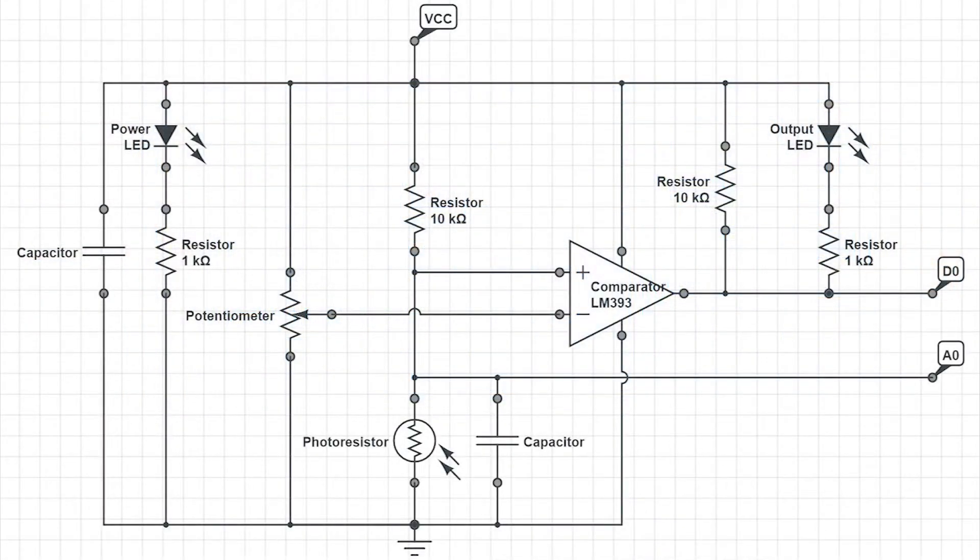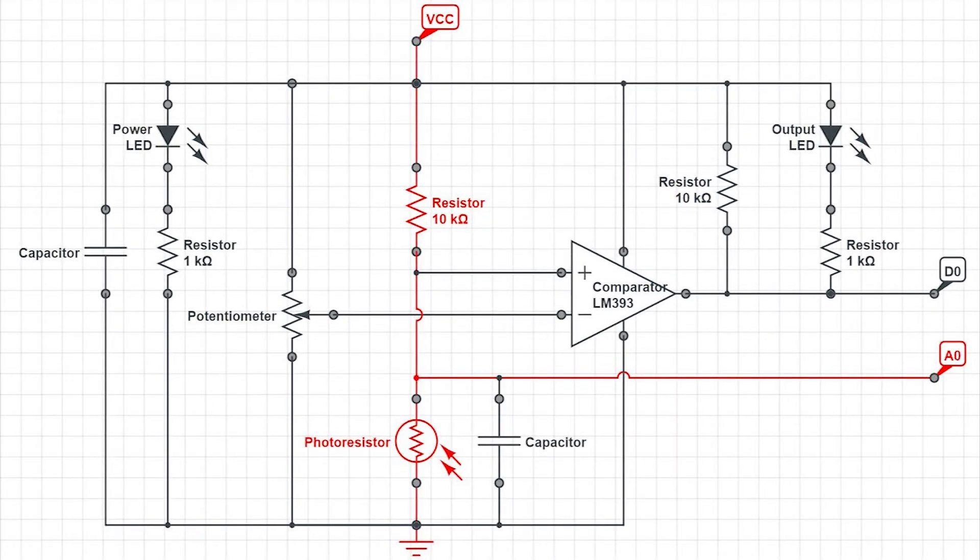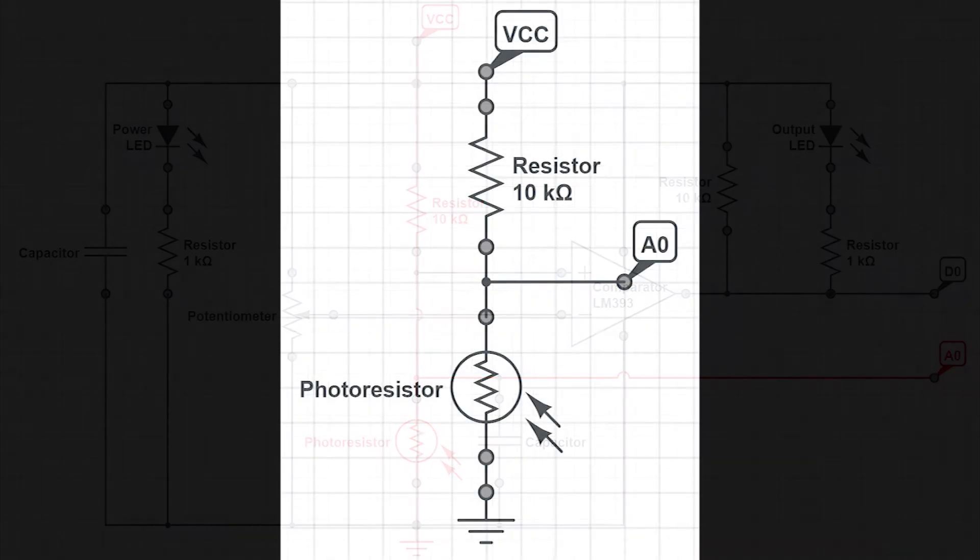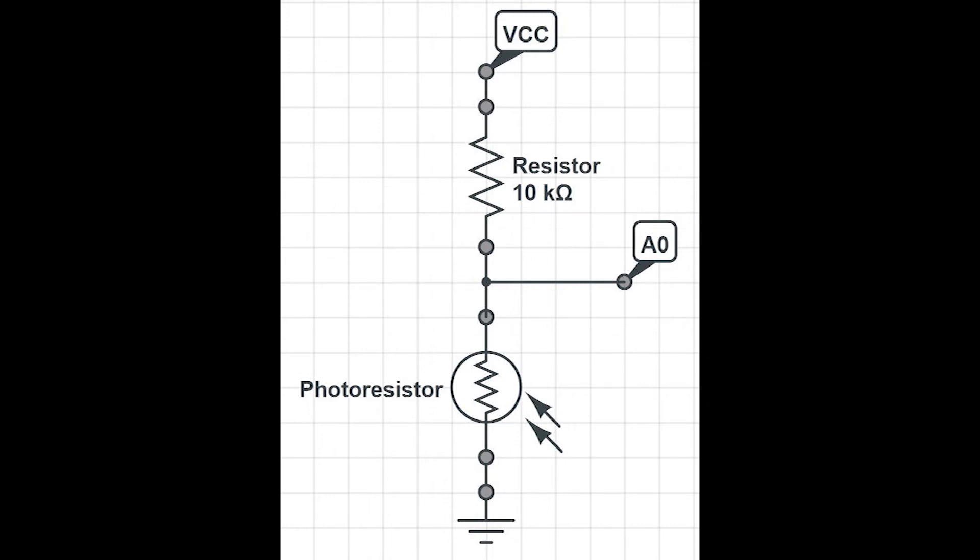The photoresistor module has both digital and analog circuits within it. We'll be using the analog today, so we can ignore the much more complex portion of the circuit for now. So now, to make sound from light.